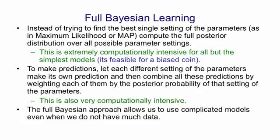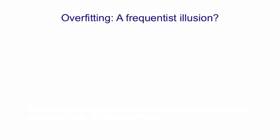The advantage of doing this is that if we use the full Bayesian approach we can use complicated models even when we don't have much data. So there's a very interesting philosophical point here. We're now used to the idea of overfitting when you fit a complicated model to a small amount of data.